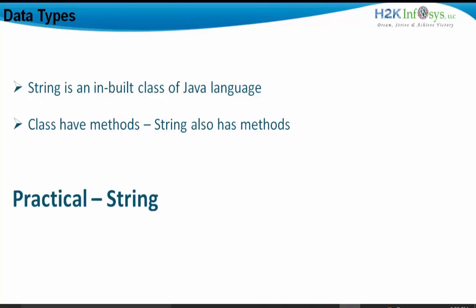Similarly, since string is an inbuilt class of the Java language, it will have different methods. Methods are also called functions. The different methods of the string class will be covered when we finish the concept of functions. At this point, I will just declare variables as string type. Let's go to the practicalities of it.